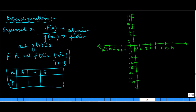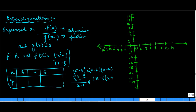Now if you solve this particular equation, what will you do? x squared minus 1 can also be written as x squared minus 1 squared upon x minus 1. We know that anything in the form of a squared minus b squared can be written as a minus b into a plus b. Here a is equal to x and b is equal to 1. So you can write this as x minus 1 into x plus 1 divided by x minus 1. These two cancel out, and what we are left with is only x plus 1.